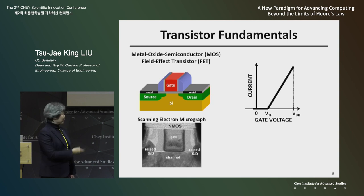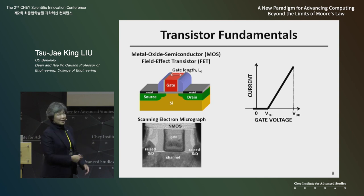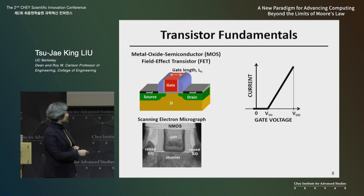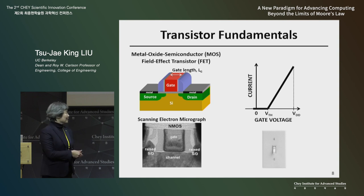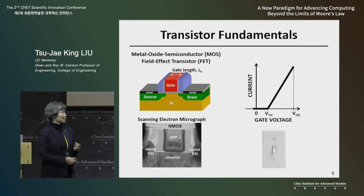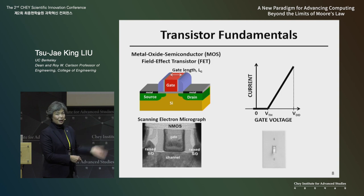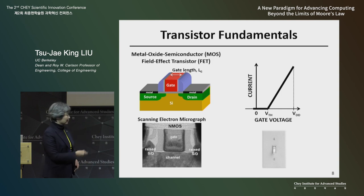For a general audience, all you need to know is that a transistor is supposed to function as a digital switch — it can either be on or off. If it's off, that means the gate voltage is less than the threshold voltage. If you look at the current on a logarithmic scale, the current does not go to zero at the threshold voltage — it exponentially decreases towards zero.